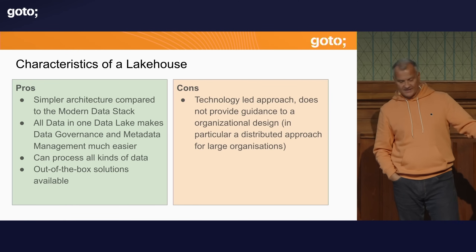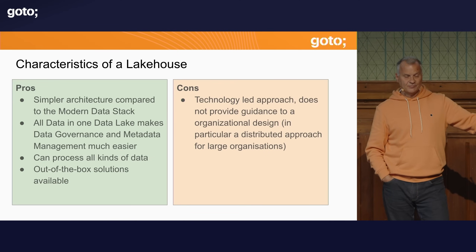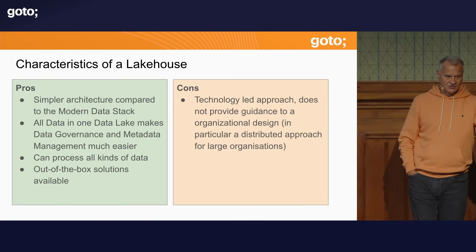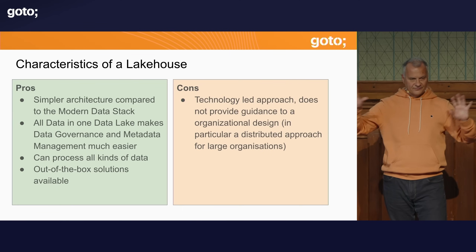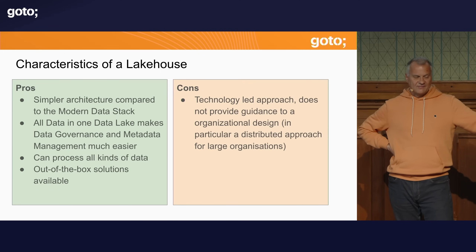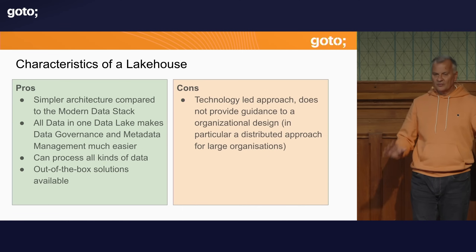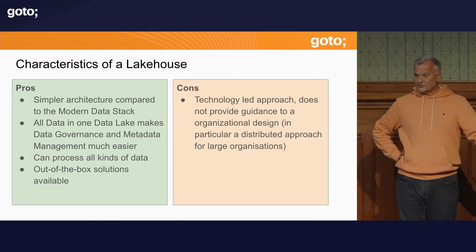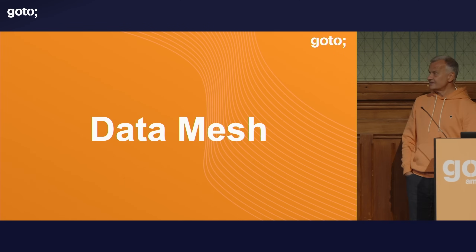To summarize the lakehouse: it's a simpler architecture compared to the general modern data stack. All data in one data lake makes data governance and metadata management much easier. It can process any kind of data, and out-of-the-box solutions are available from Databricks and other vendors. The con: it's a very technology-led approach — it doesn't give guidance on organizational design of your data organization. For very large organizations needing a distributed approach across different business units, one lakehouse can become a bottleneck. That's where another architecture comes in: the data mesh.